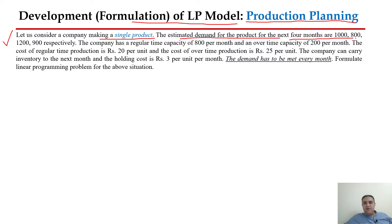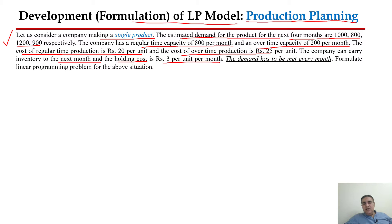In this problem, it is saying that a company is producing a single product. They have given us the estimated demand for the next four months. Similarly, they also told us the regular time production capacity per month as well as the overtime production capacity per month, the production cost in regular time per unit, overtime per unit cost, and the inventory holding cost per month per unit is three rupees. We have to meet the demand every month.